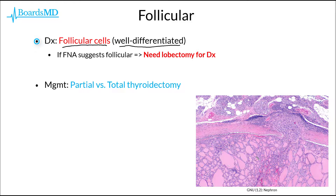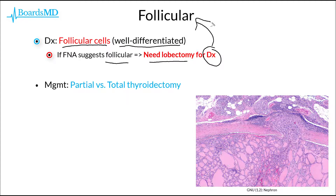Therefore, if we perform an FNA and it showed follicular cells, we wouldn't know whether we were looking at normal thyroid tissue or follicular carcinoma, as we would need to see the full tissue sample in order to clinch the diagnosis. Therefore, if an FNA suggests follicular carcinoma of the thyroid, we are going to need a tissue sample, often with a partial or total lobectomy, in order to establish the diagnosis. Ultimately, our management for these patients is going to be with a thyroidectomy, be it partial or total.